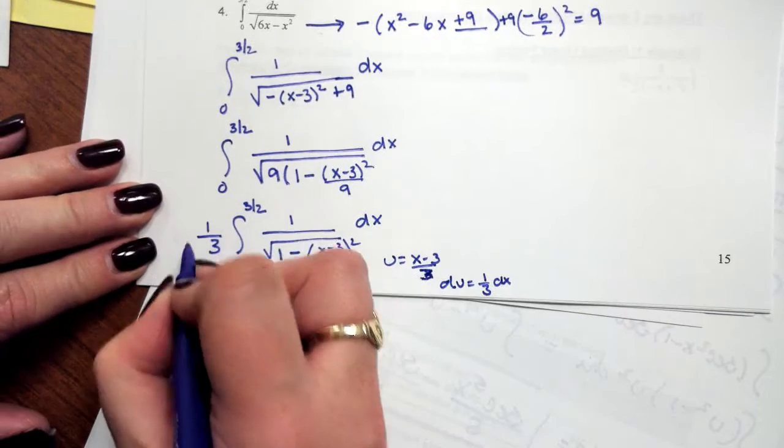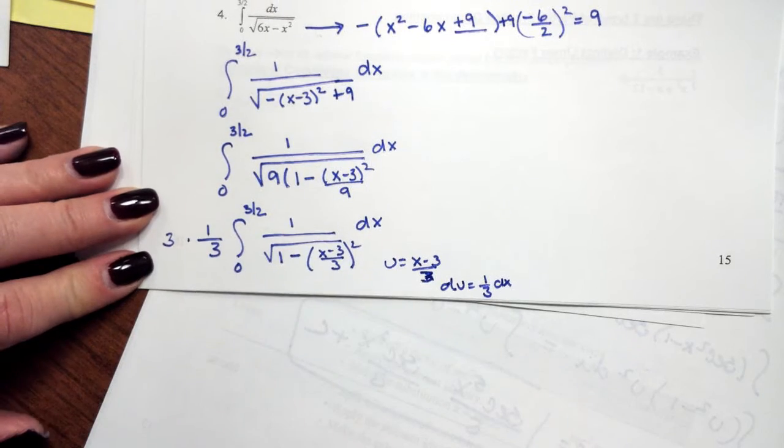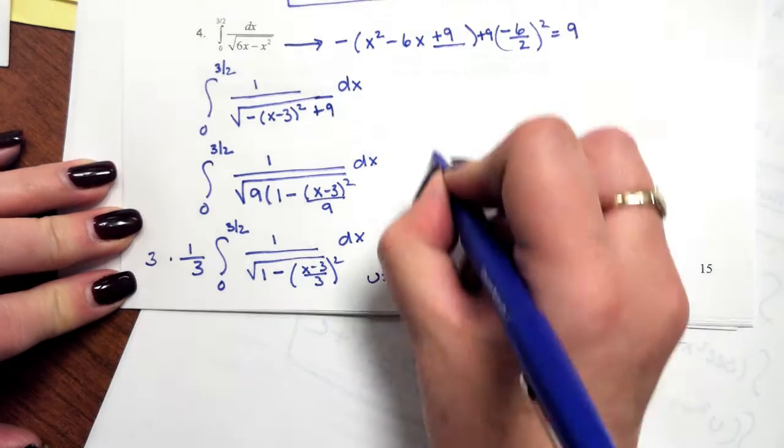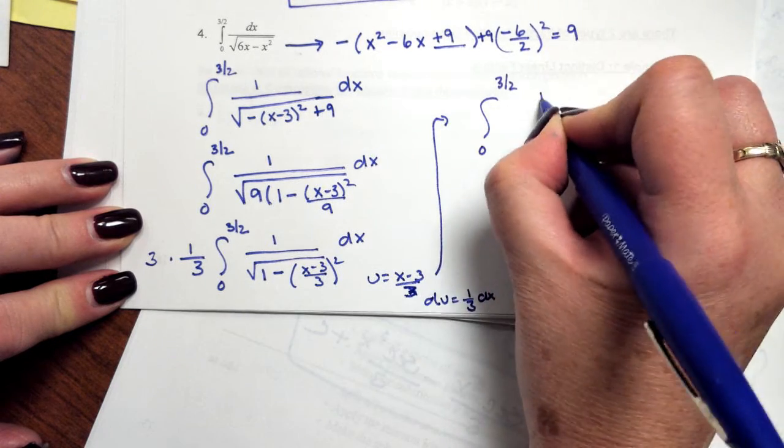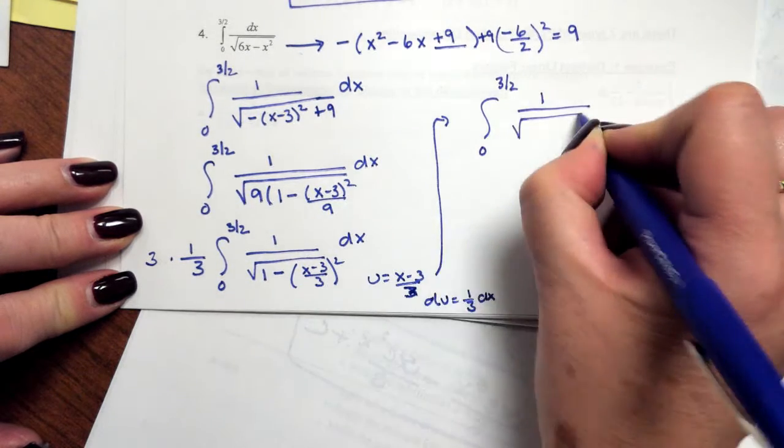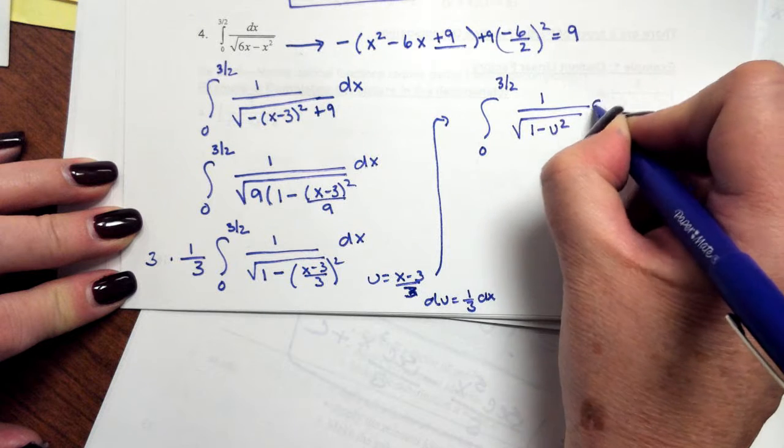If I divide out the 1 third, that means I'm going to multiply my integral by 3. So I'm going to be left with my integral from 0 to 3 halves, 1 over the square root of 1 minus u squared du.